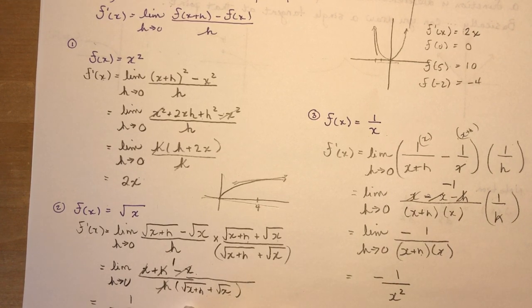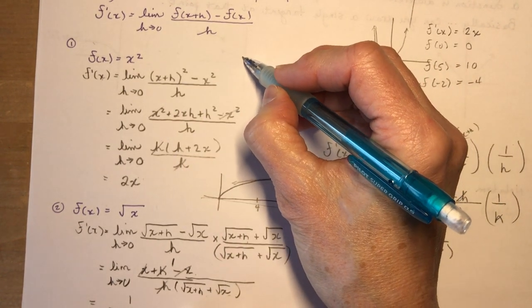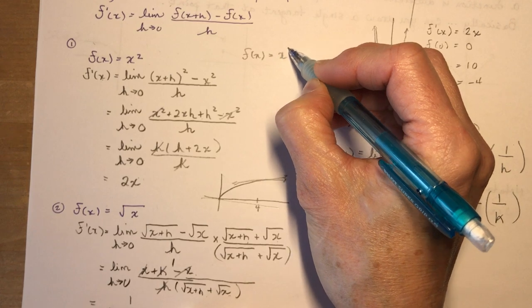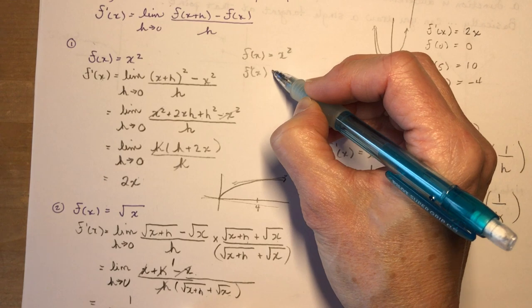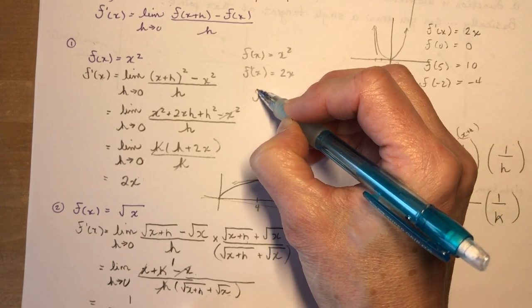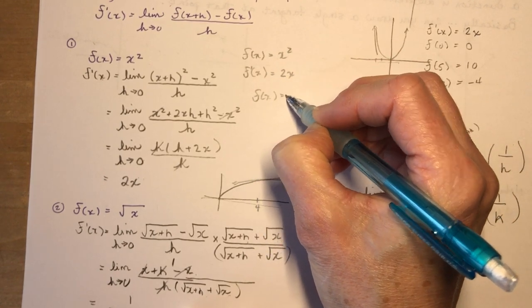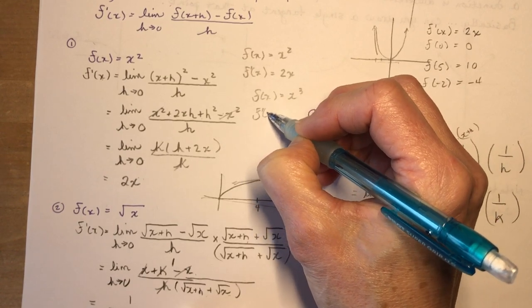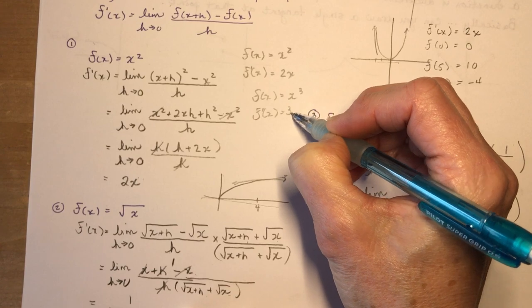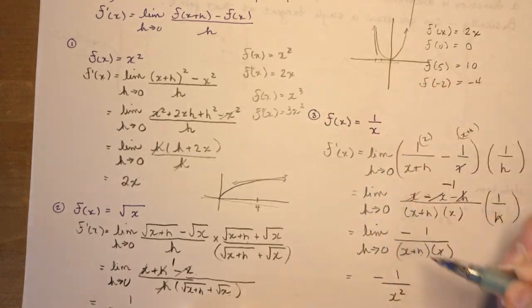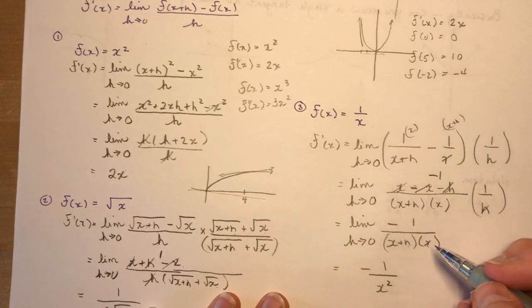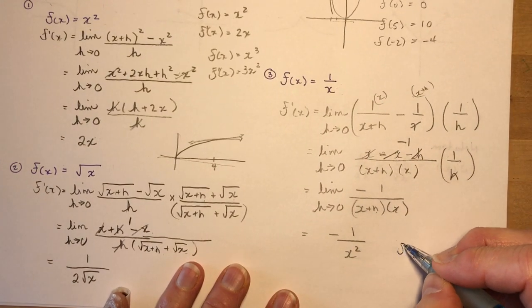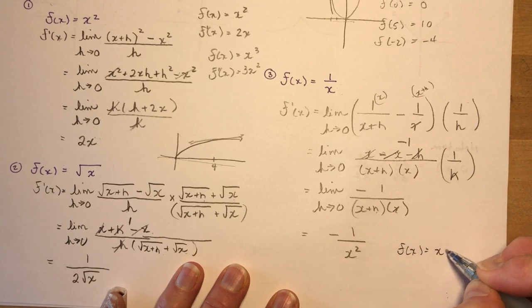So those are your derivatives from first principles. I'm going to show you something really, you're going to say, oh, why didn't we do this earlier? If we have something like x squared, so if f at x equals x squared, for the derivative, all I have to do is bring the 2 to the front and reduce the exponent by 1. So if I have f at x equals x cubed, then f prime x is going to be 3x squared.